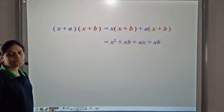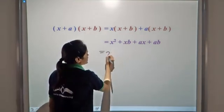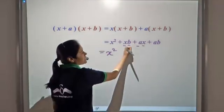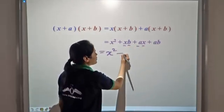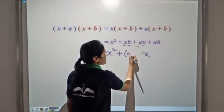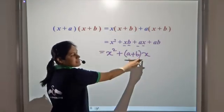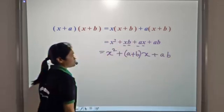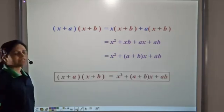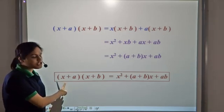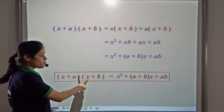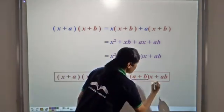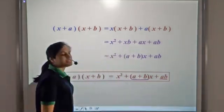So we have x²+xb+ax+ab. Now x is multiplied with b here and x is multiplied with a here, so we can take x common and write this as (a+b). When we expand it, we get ax and bx. And we have an ab term. This is a special identity: when we multiply two expressions of the form (x+a)(x+b), the coefficient of the middle term is the sum of a and b, and the last term is the product of a and b.